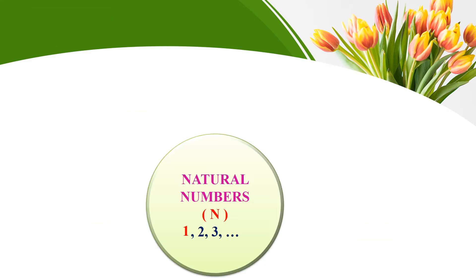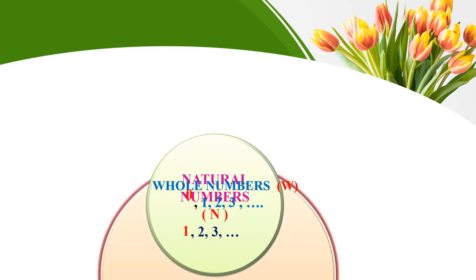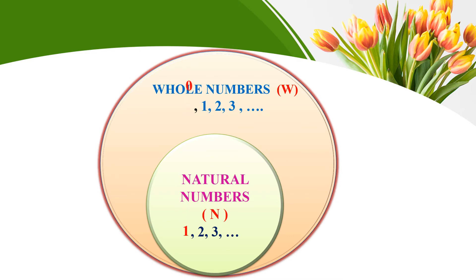Look at this picture — natural numbers start with one, two, three, four, and so on. In other words, these are counting numbers. Whole numbers start with zero, one, two, three, four, and likewise. So whole numbers means zero along with natural numbers are called whole numbers.